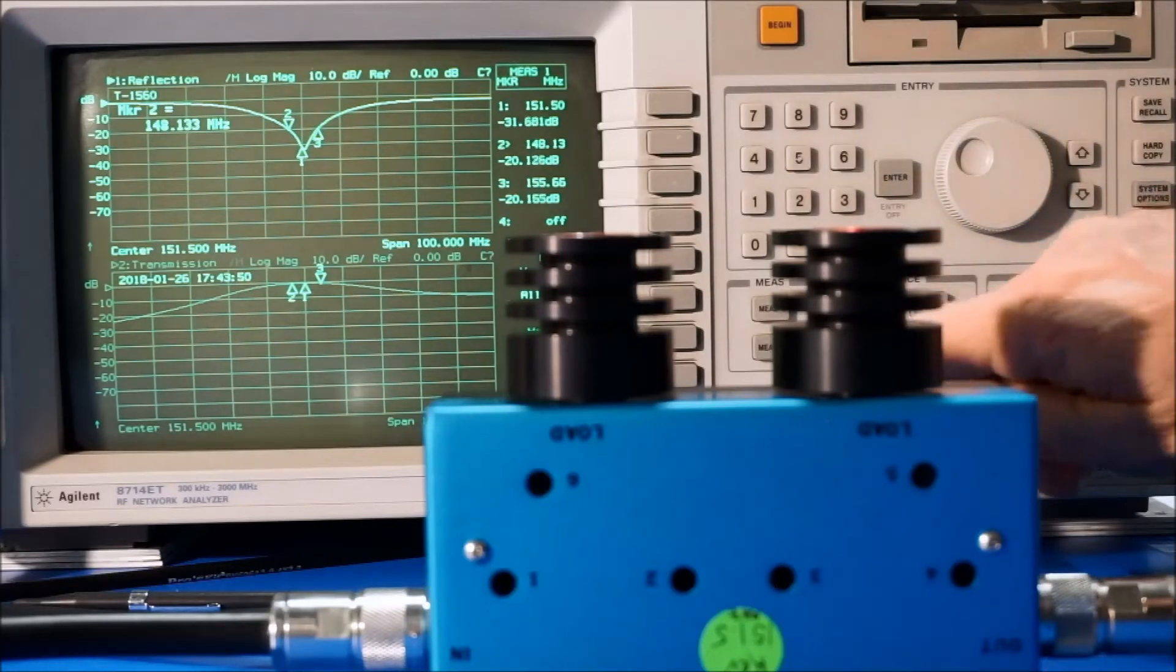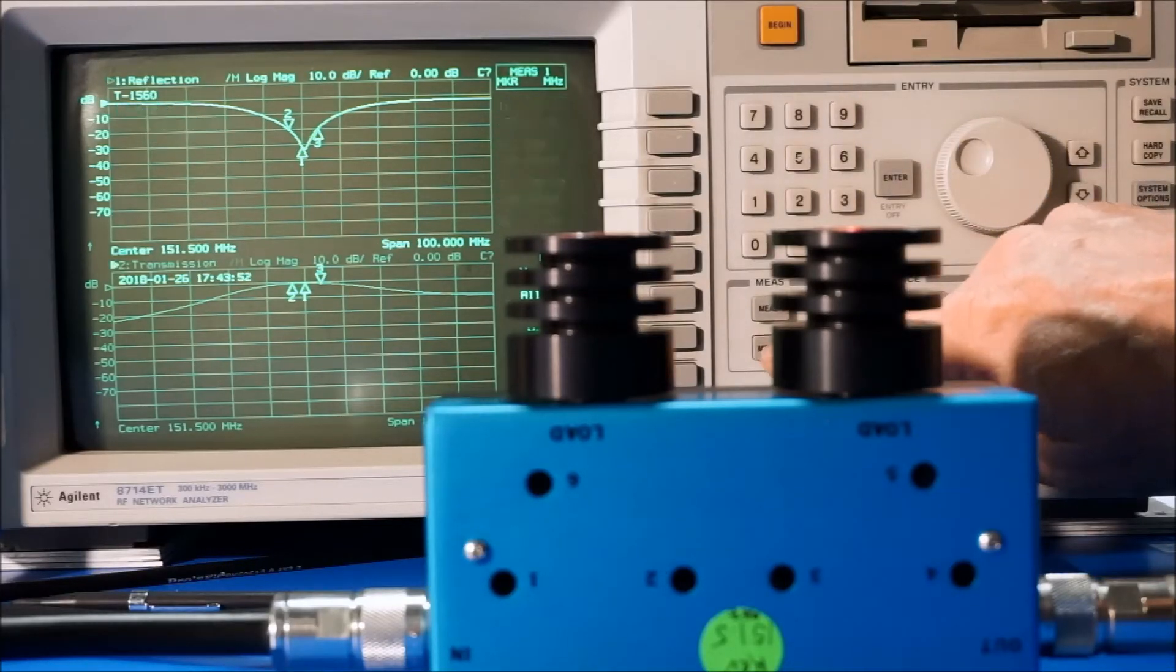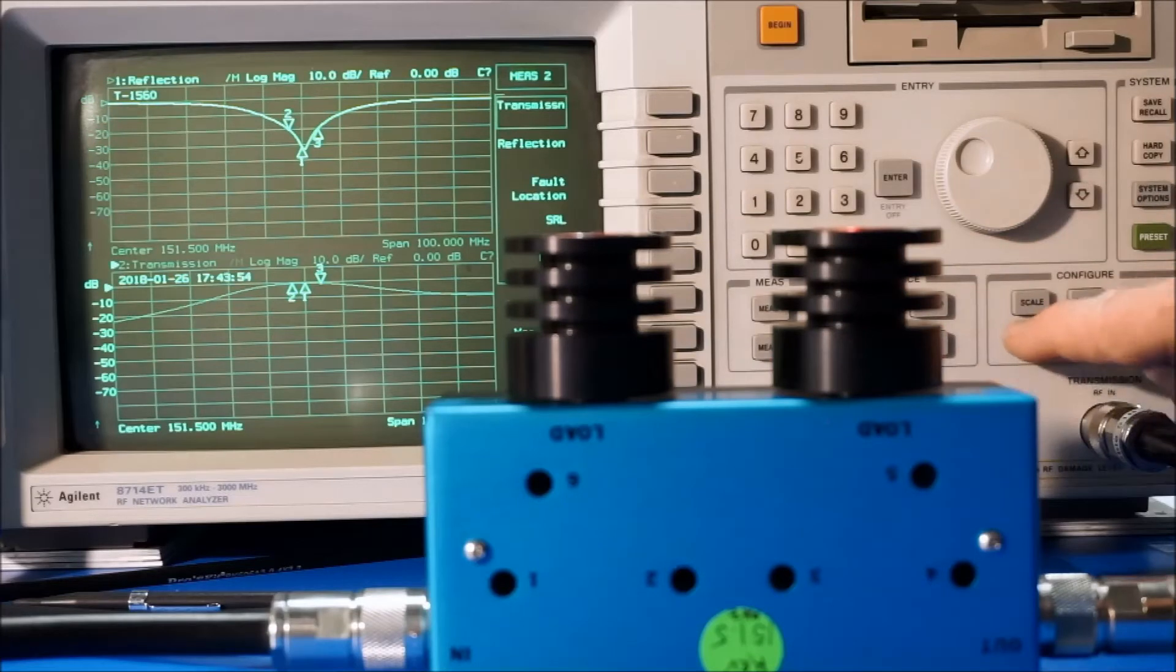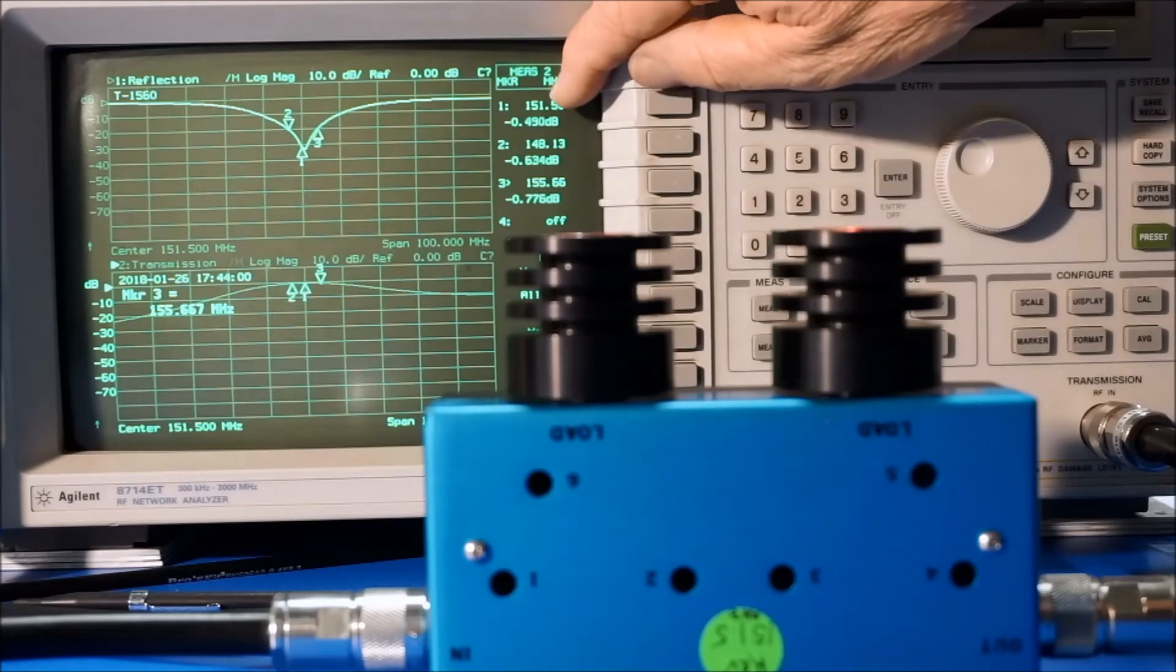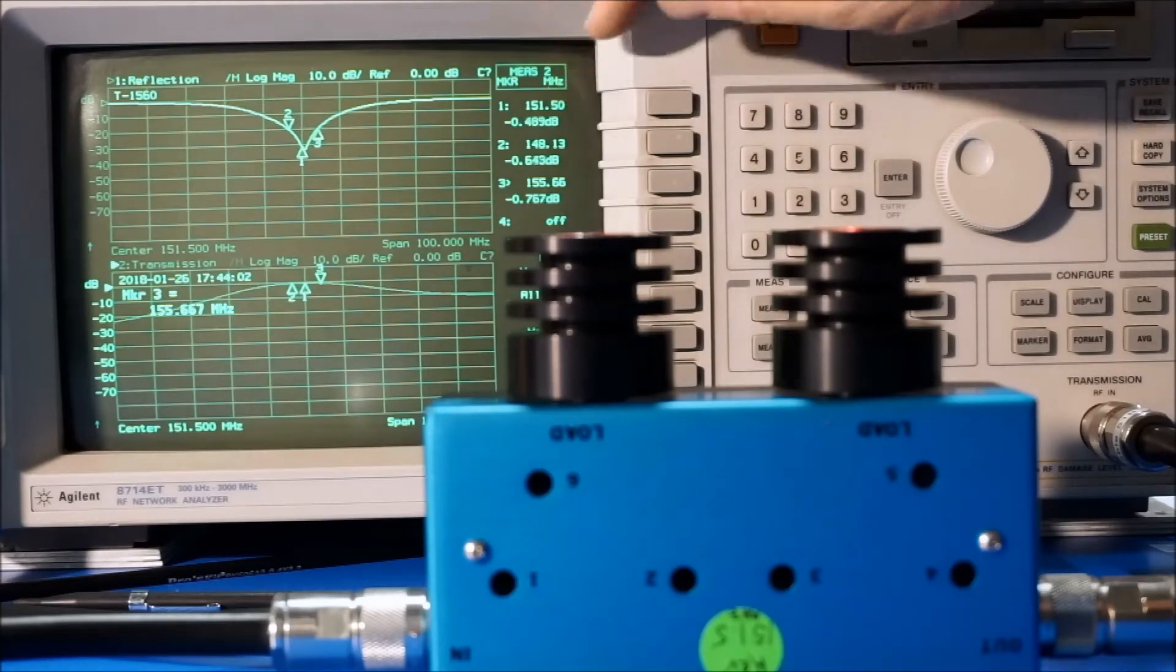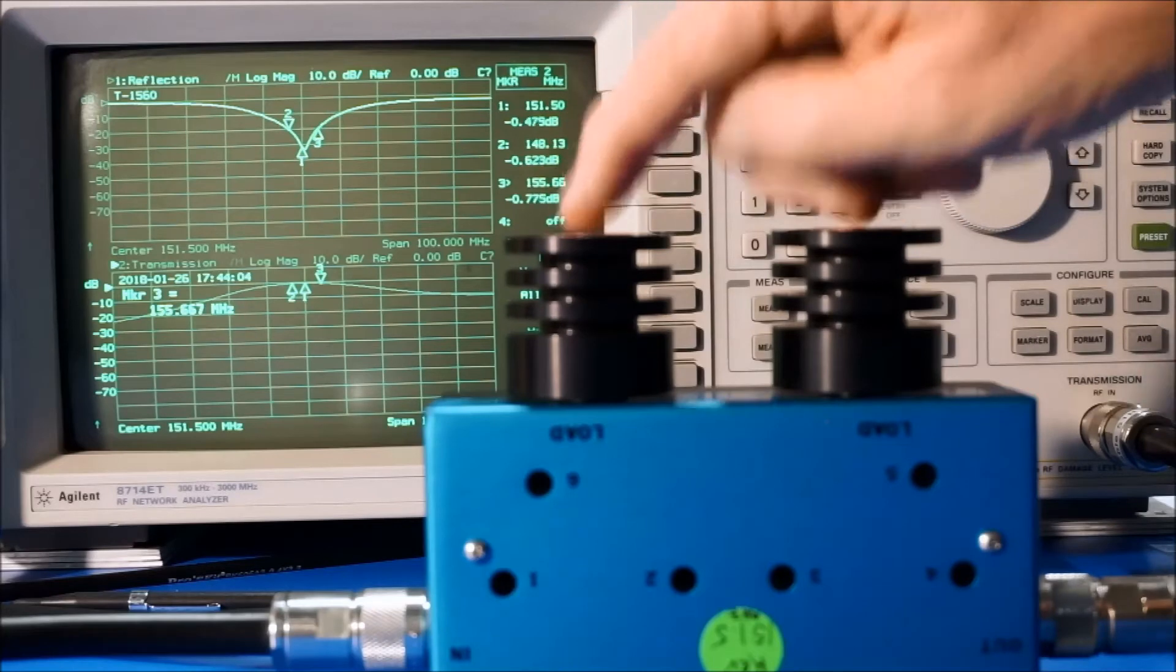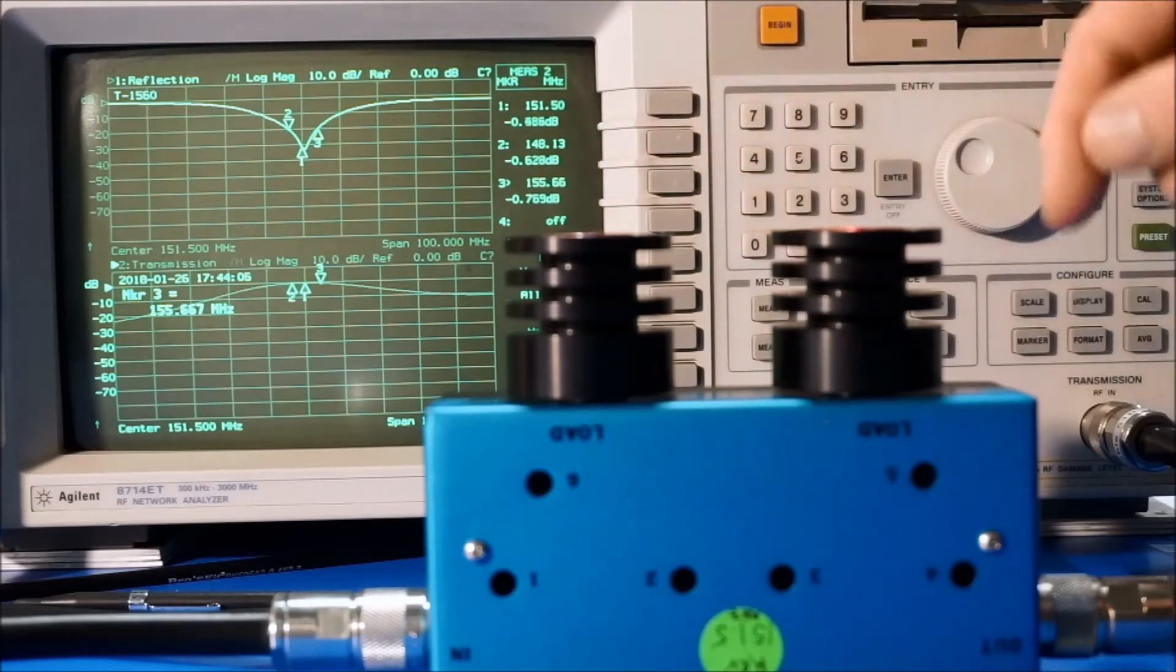And then when we go to measure two and put the markers up for that, we're at 0.48 something, about a half a dB of loss on a dual isolator here. So it meets, actually exceeds the spec that we have.